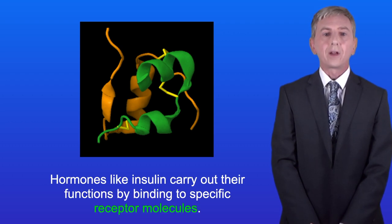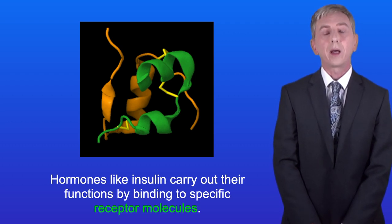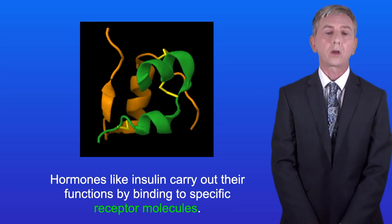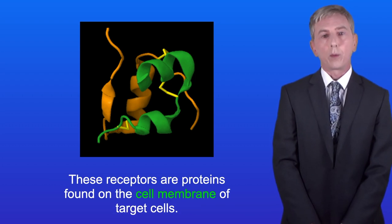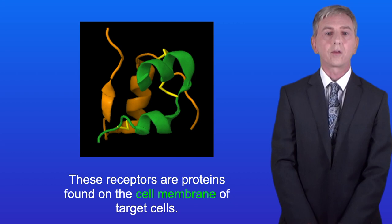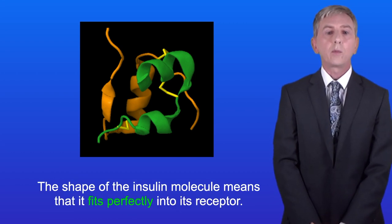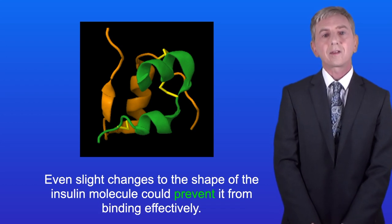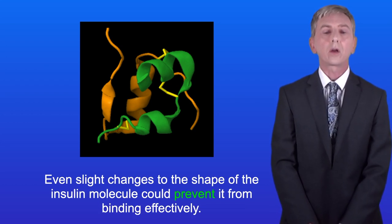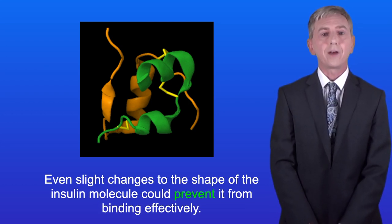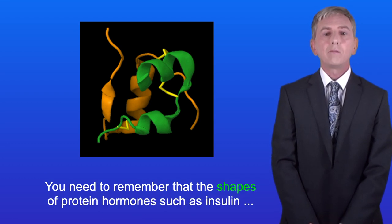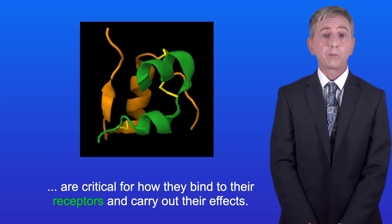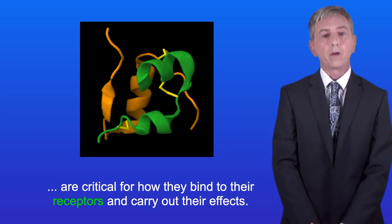Hormones like insulin carry out their functions by binding to specific receptor molecules, which are proteins found on the cell membrane of target cells. The shape of the insulin molecule means that it fits perfectly into its receptor, and even slight changes to the shape could prevent it from binding effectively. The shapes of protein hormones such as insulin are critical for how they bind to their receptors and carry out their effects.